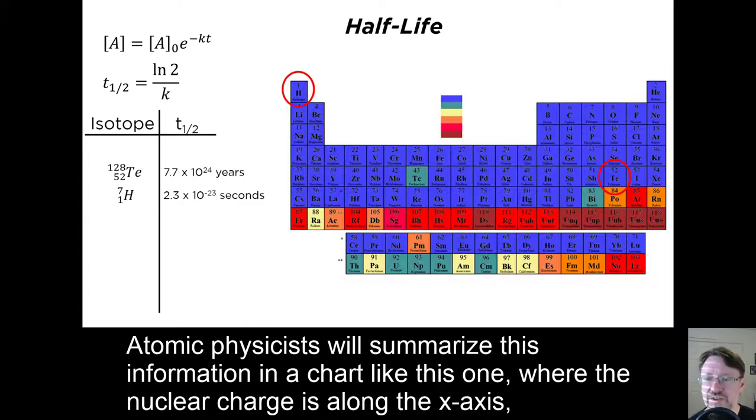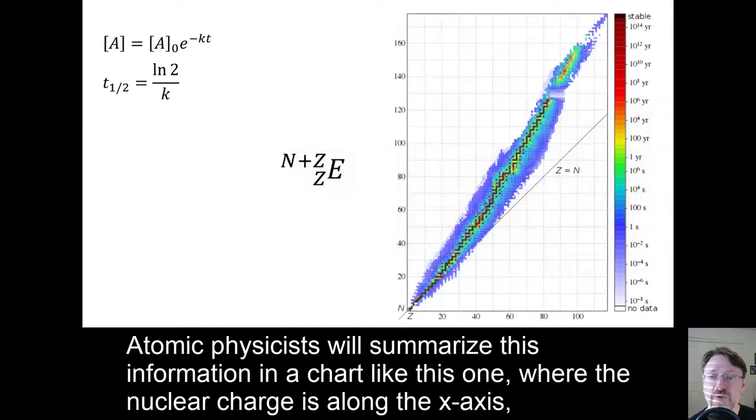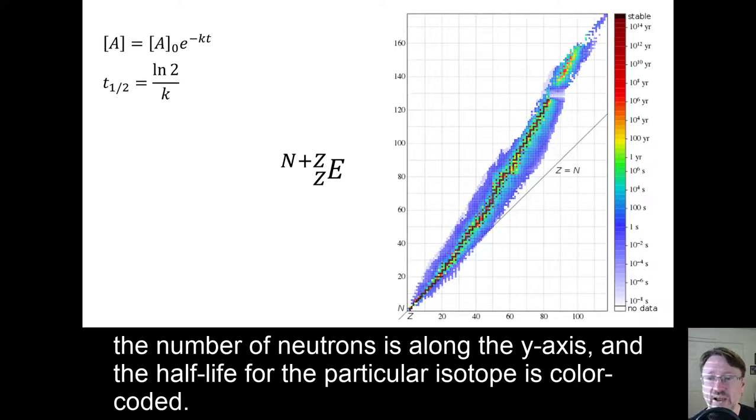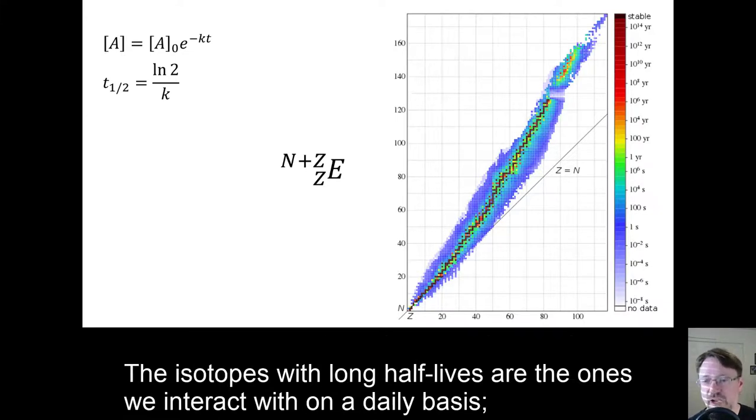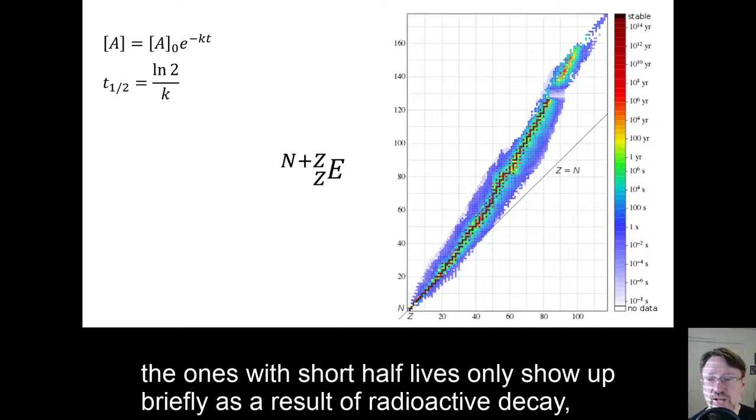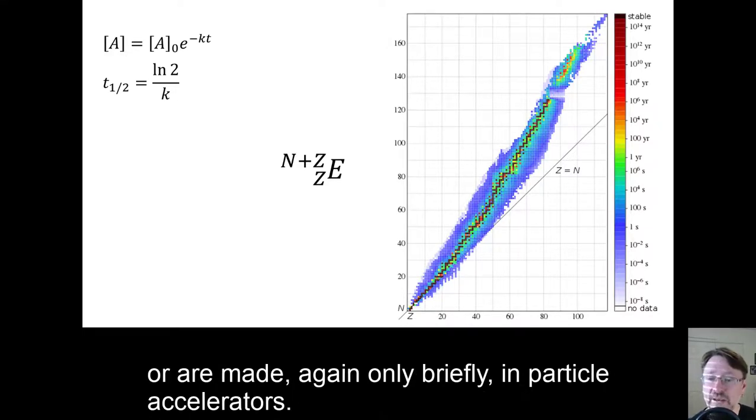Atomic physicists will summarize this information in a chart like this one, where the nuclear charge is along the x-axis, the number of neutrons is along the y-axis, and the half-life for the particular isotope is color-coded. The isotopes with long half-lives are the ones we interact with on a daily basis. The ones with short half-lives only show up briefly as a result of radioactive decay, or are made, again, only briefly in particle accelerators.